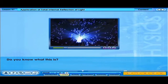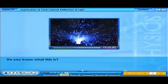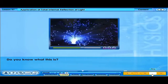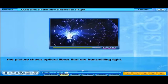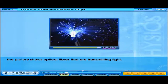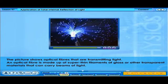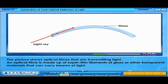Do you know what this is? The picture shows optical fibers that are transmitting light. An optical fiber is made up of super thin filaments of glass or other transparent materials that can carry beams of light. Let's take a closer look at how light is transmitted through optical fiber.